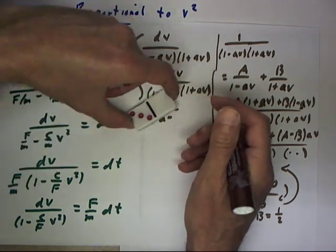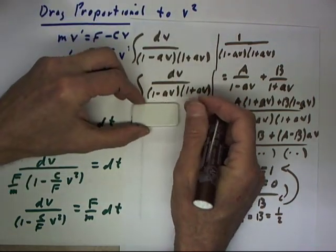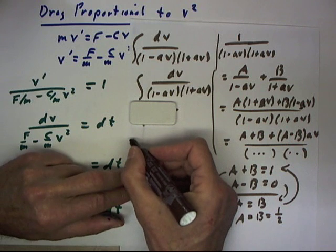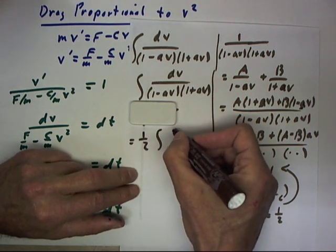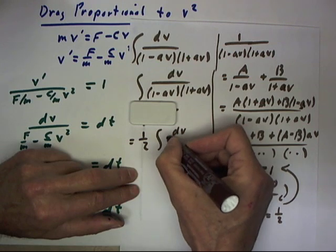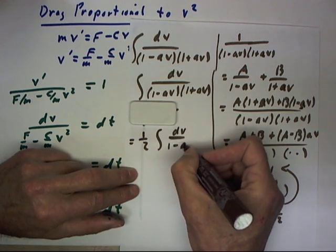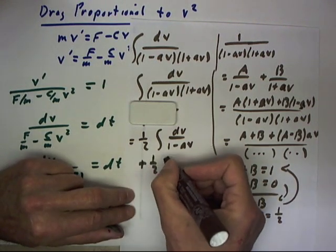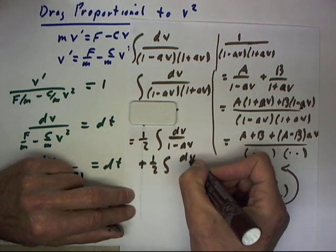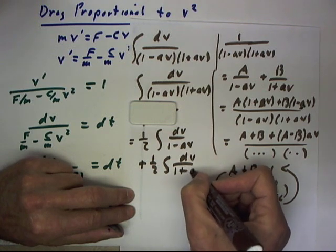Let's just get rid of that step and write it again. So this equals 1 half the integral of dv over 1 minus av plus 1 half the integral of dv over 1 plus av.